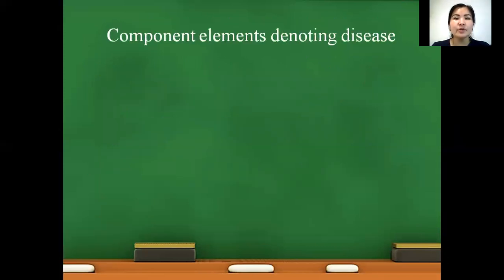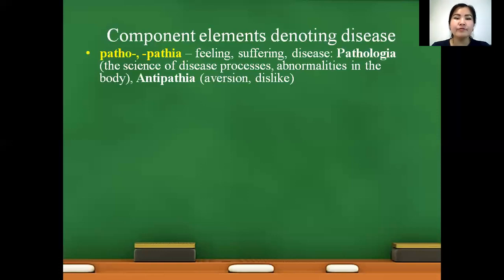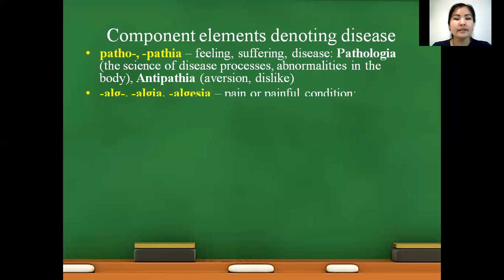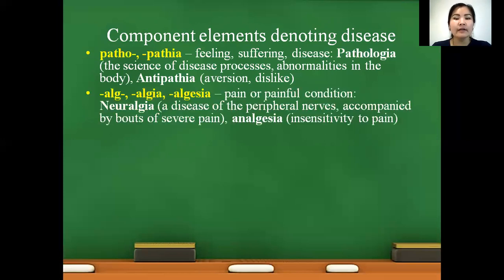Component elements denoting disease. Pathopatia — feeling, suffering, disease. Pathologia — the signs of disease processes and abnormalities in the body. And antipathia — aversion, dislike. Algea, algia, algasia — pain or painful condition. For example: neuralgia — disease of the peripheral nerves. Analgesia — insensitivity to pain.